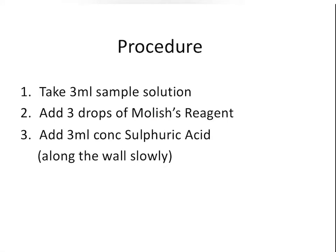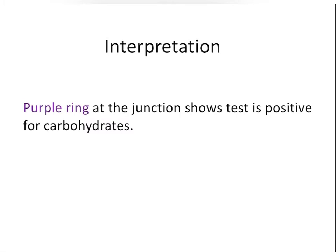Take 3 ml of sample solution in a test tube, then add three drops of Molisch reagent. Then 3 ml of concentrated sulfuric acid is added slowly along the walls of a tilted test tube. You will see the formation of a purple ring at the junction of the two liquids, which indicates the presence of carbohydrates in the given solution.